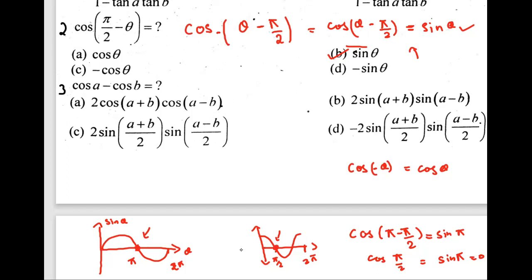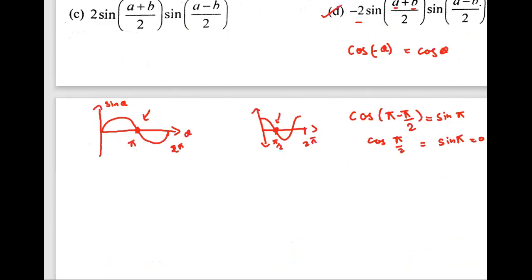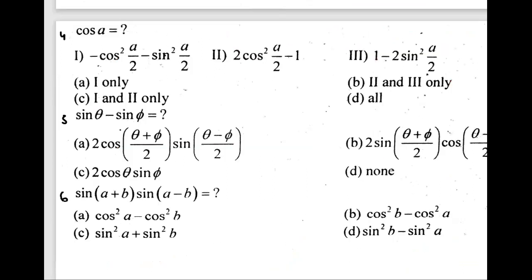Now the third question: cos a − cos b equals what? This is a trigonometric identity — cos α minus cos β equals negative 2 sin((α + β)/2) sin((α − β)/2). So D is the answer. You need to know all these identities to solve these questions.